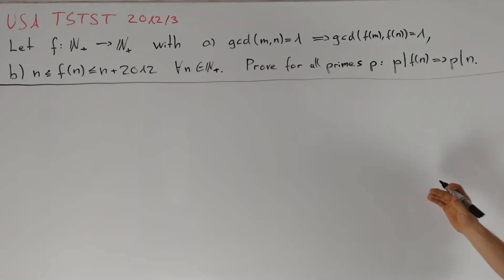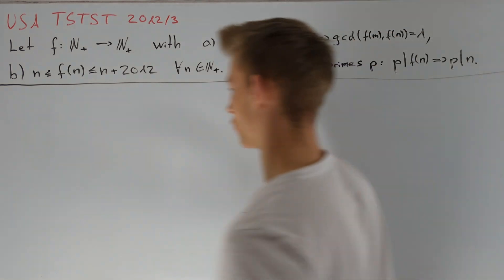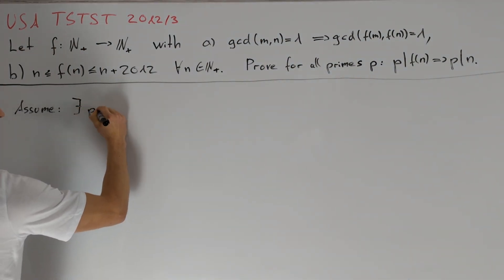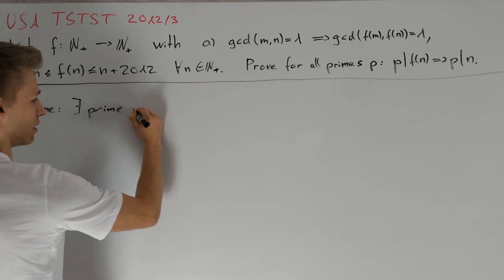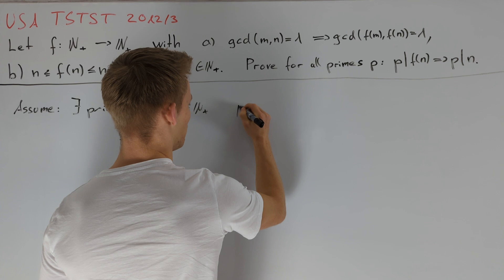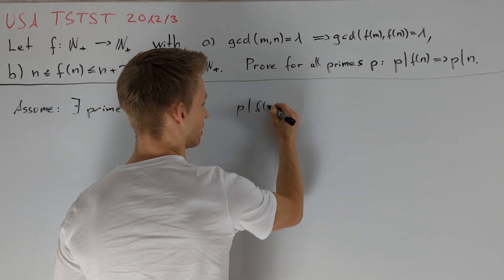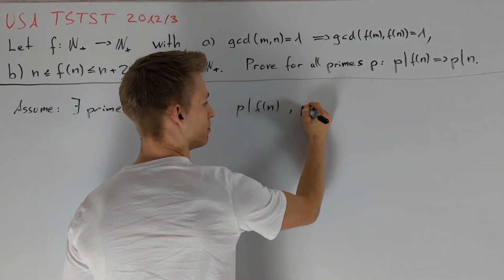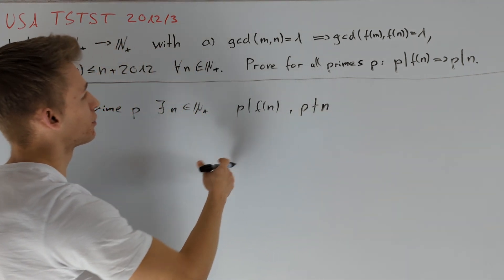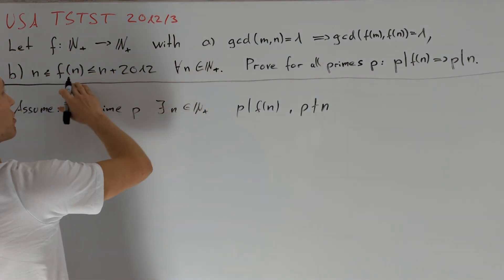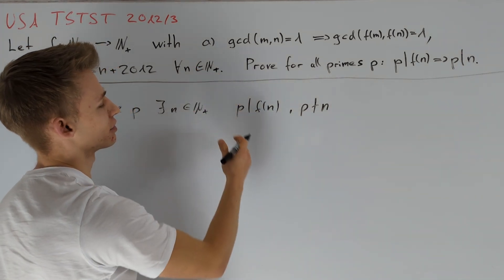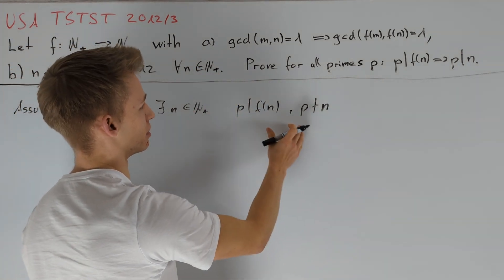To start with the problem, we assume that the given condition is false. So we find a prime number p and a positive integer n such that p divides f(n) but p does not divide n. To work on this assumption, we want to use one of our two conditions on f, and of course it is a good idea to use condition (a) because it tells us something about divisibility.